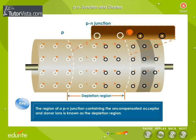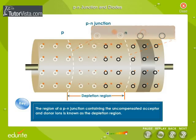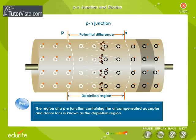The holes trying to enter the P region are repelled by the uncompensated positive charge on the donor ions. As a result, potential difference is established across the junction.